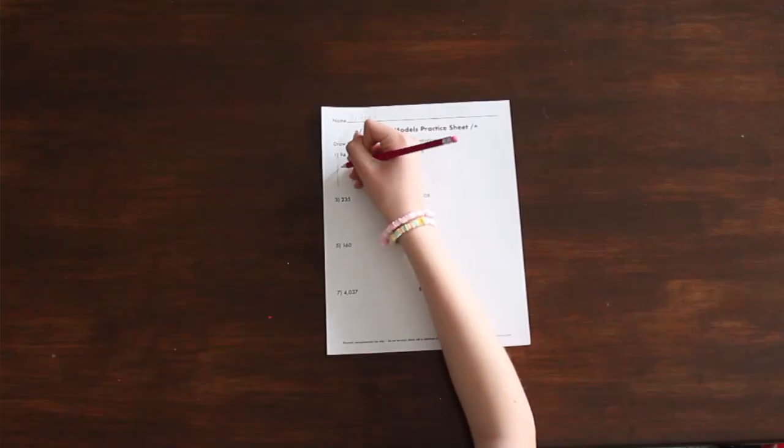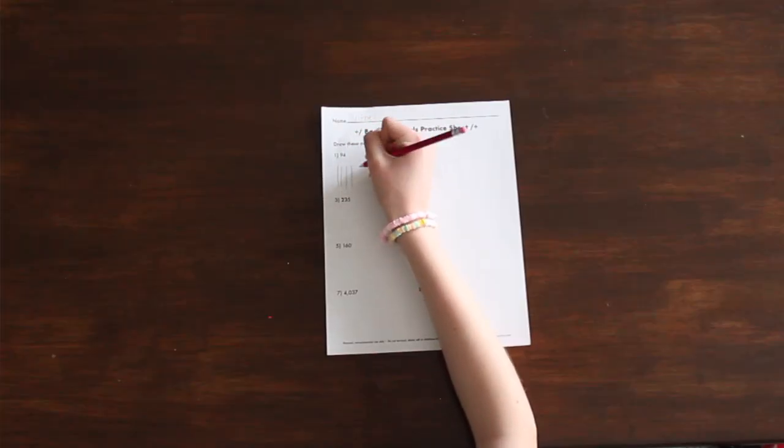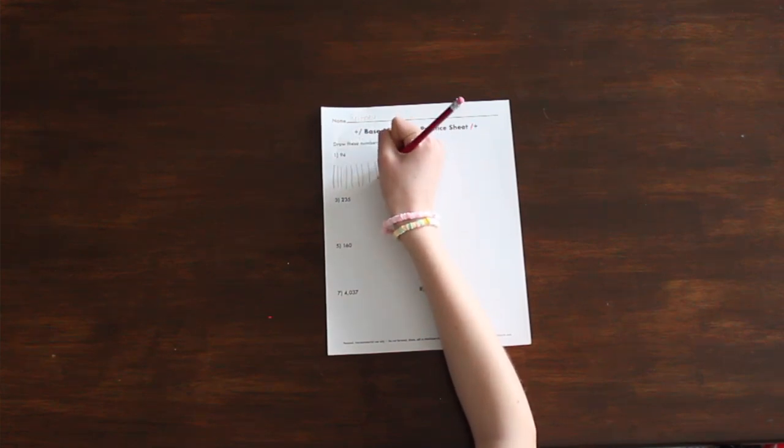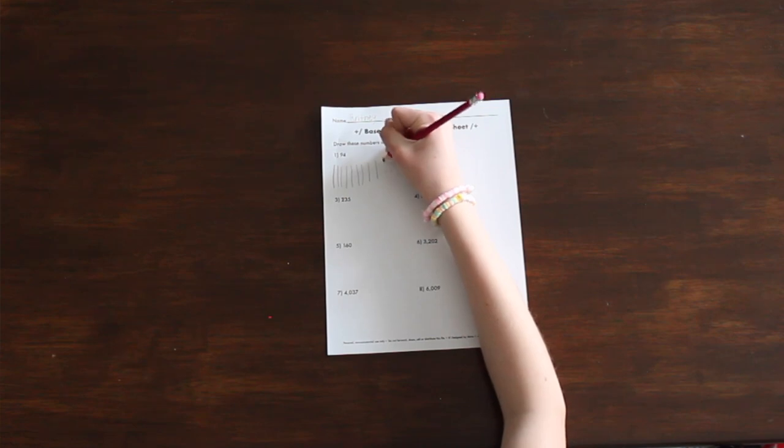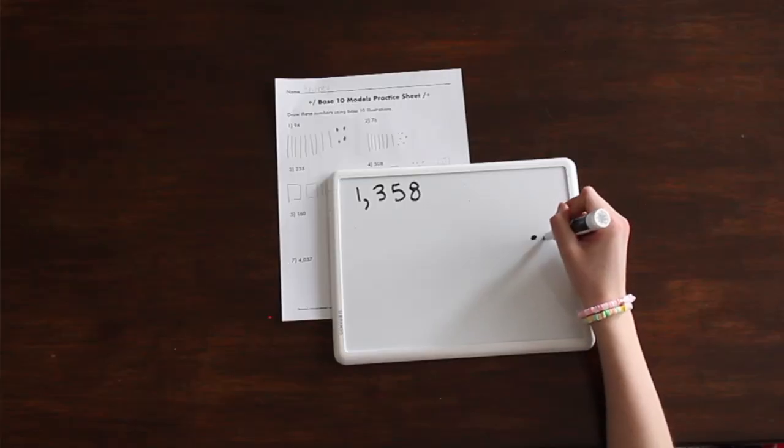Before I get into explaining the pictorial method, I would like the students to make sure that they know how to draw their base 10 models. Most students have been drawing these base 10 models since like second grade or first grade, so they should be really familiar with drawing base 10 models. My kit has a worksheet that has students draw base 10 models. You could also just write the number on the board and have students draw them on their whiteboards or on a piece of paper.